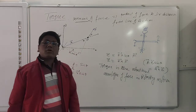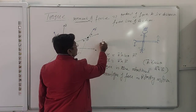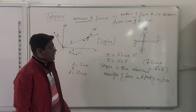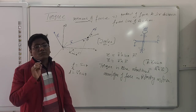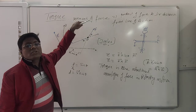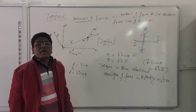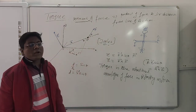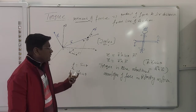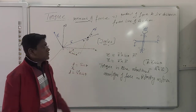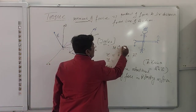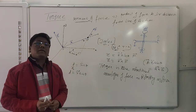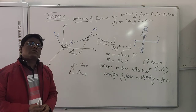The unit of torque is Joules — the same as energy, but torque is not energy; it is a vector quantity and the rotational analog of force. The dimensions of torque are ML²T⁻². In the next lecture, I will explain angular momentum, which is also very important. Thank you so much.